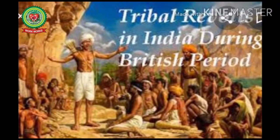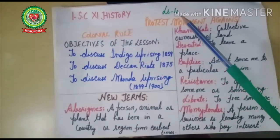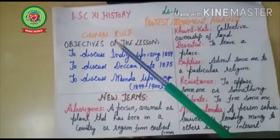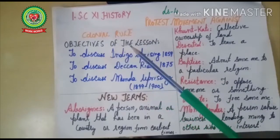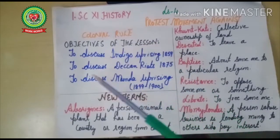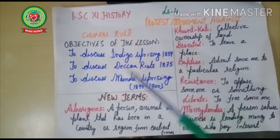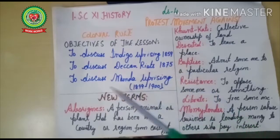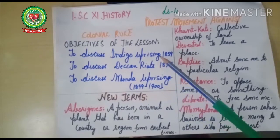Welcome to the history class. Today we are going to continue with Lesson 4: Protest Movements Against Colonial Rule. Before going through the lesson, we will discuss the objectives: to discuss the Indigo Uprising of 1859, the Deccan Riots of 1875, and the Munda Uprising of 1899 to 1900.